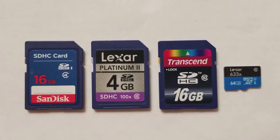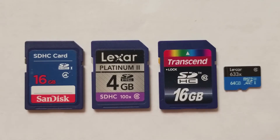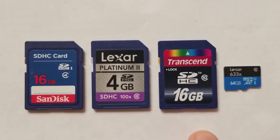The first card is a SanDisk SDHC card. SD stands for Secure Digital, whereas SDHC stands for Secure Digital High Capacity. SD cards have a capacity ranging from 128 MB to 2 GB. SDHC cards have a capacity ranging from 4 GB to 32 GB. The first three cards here are 16 GB, 4 GB, and 16 GB, so all three are SDHC cards, as written on each of them.